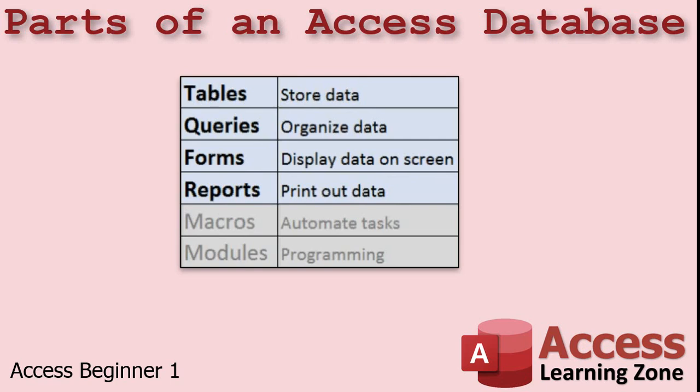Tables are used to store data. All of the data in your Access database will be stored in one or more tables. Queries are generally used to organize data. Forms are used to display data on the screen and to edit that data. Reports are for printing out data or formatting information for the printed page.